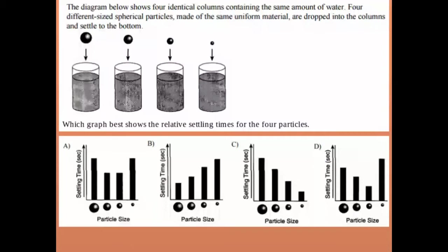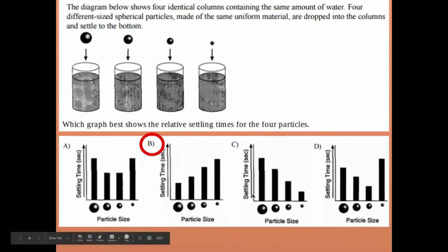Practice question: which graph best shows the relative settling times for each of four particles? Note — this asks about settling time, not settling rate. The correct answer is choice B: it takes less time for a larger particle to settle and more time for a smaller particle. Choice C would be correct if the y-axis showed settling rate instead of settling time.